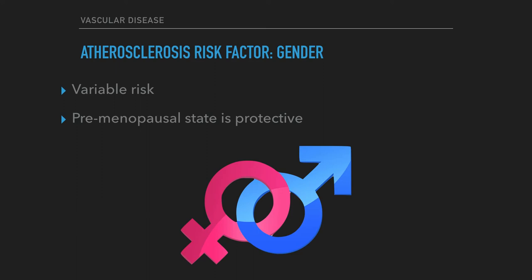The effect of gender is variable on risk, with some studies showing higher rates of disease in women and others showing higher rates in men. Certainly, the premenopausal state is protective against peripheral vascular disease, such that premenopausal women have lower rates compared with age-matched controls.